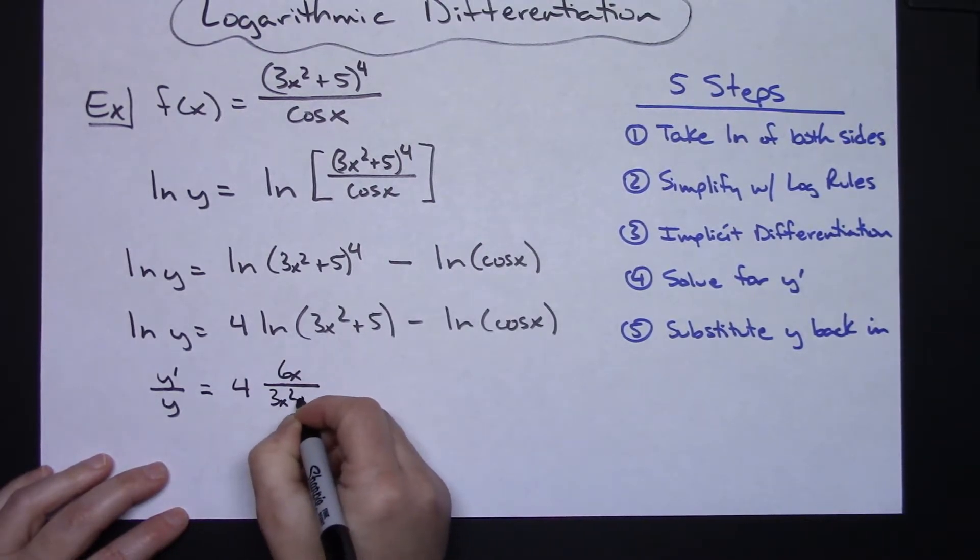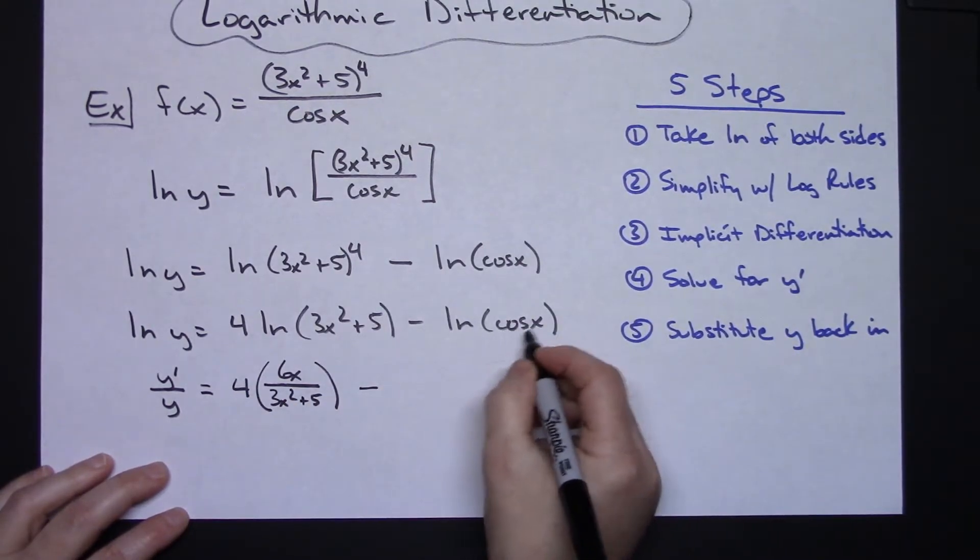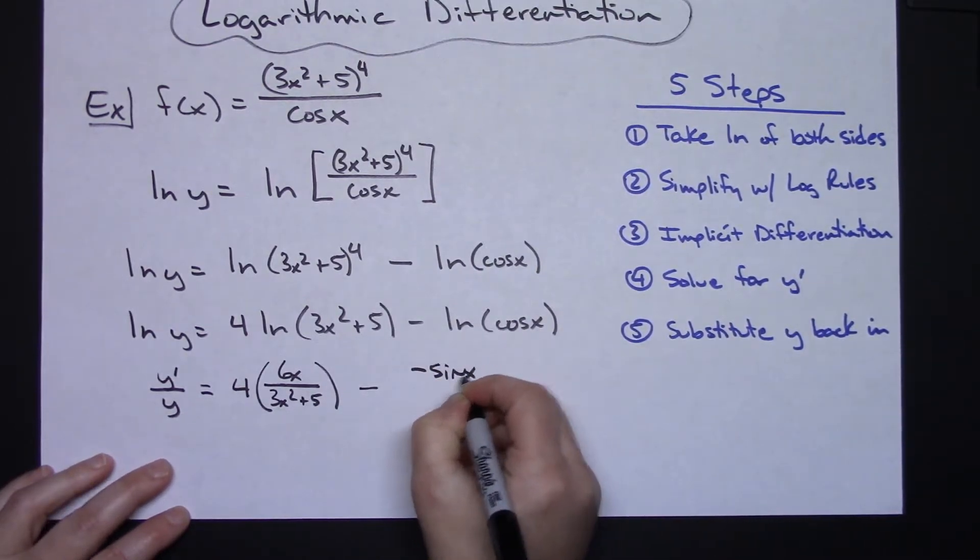derivative of the inside here. Derivative of cosine would be minus sine and then all over u, keeping that u the same.